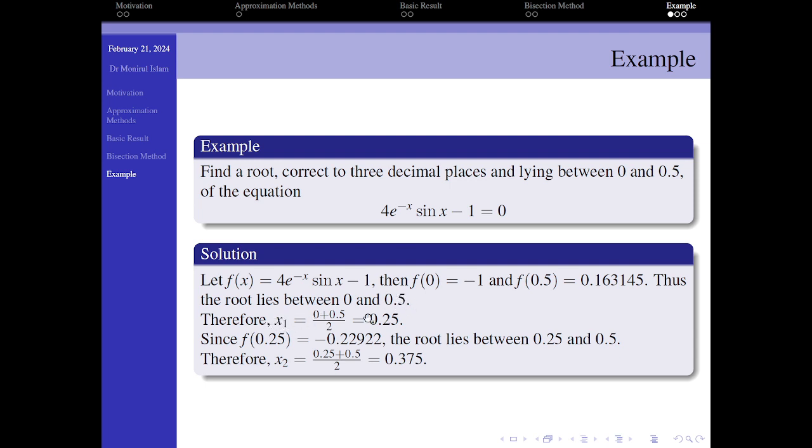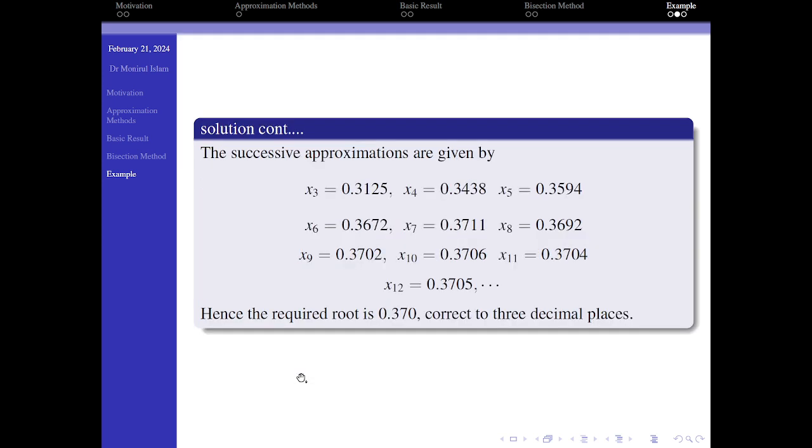So take first bisection, that means x₁ = 0.25. Now, f(0.25) is negative. That means the root lies between 0.25 and 0.5. And similarly, proceeding in this way, we get the approximate root. After ninth approximation, the root is 0.370. After 10th approximation, the root is 0.370.